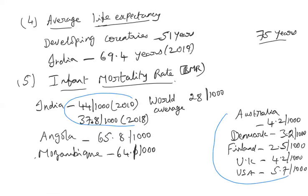This clearly shows the level of development of health facilities in a country. Life expectancy and infant mortality rate are the most sensitive indicators — if health standards are poor, this immediately reflects in a low average life expectancy and high infant mortality. India has a long way to go in improving its health standards.